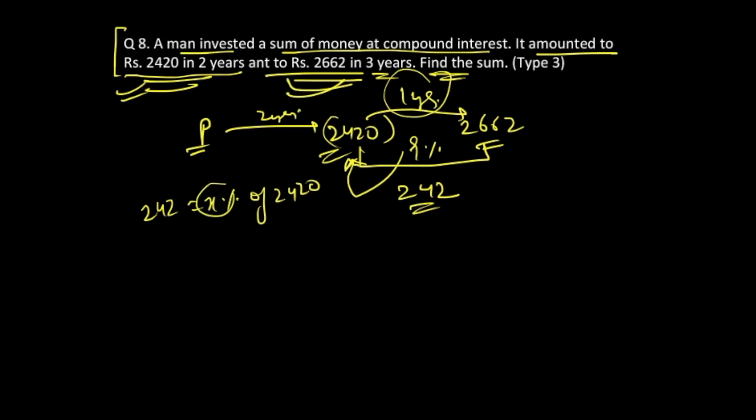This would give you the interest rate, that is this r over here. So again, you can write the same process: x equals 242 by 2420 into 100. This would give your rate of interest as 10 percent. Right, so 10 percent is the rate of interest that we have obtained now.